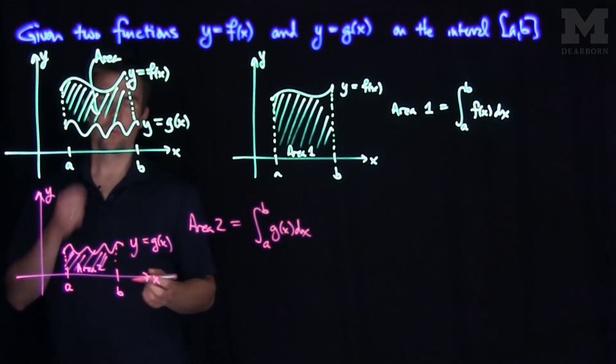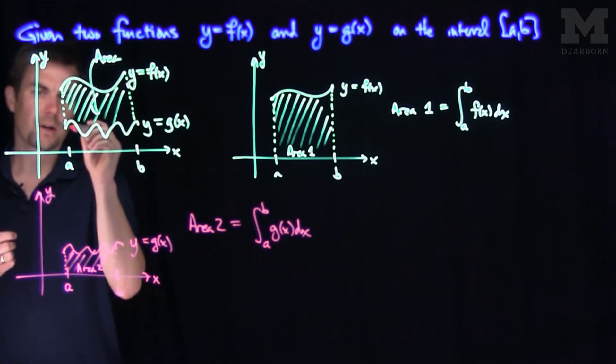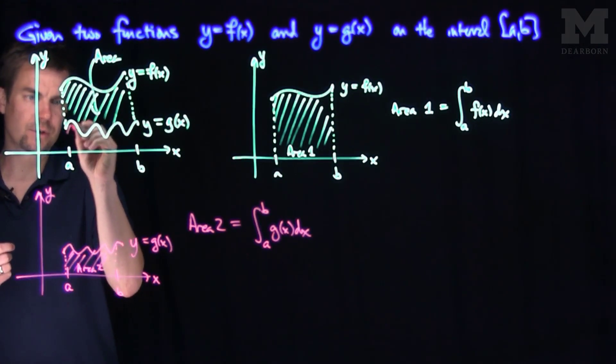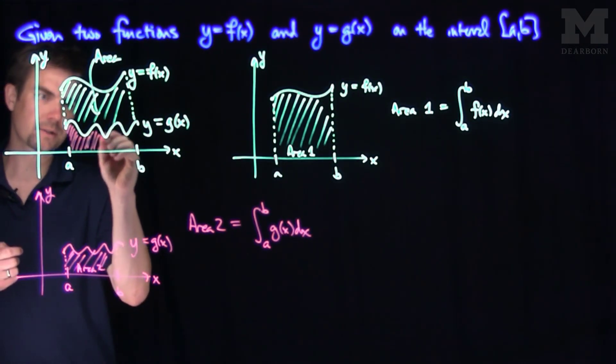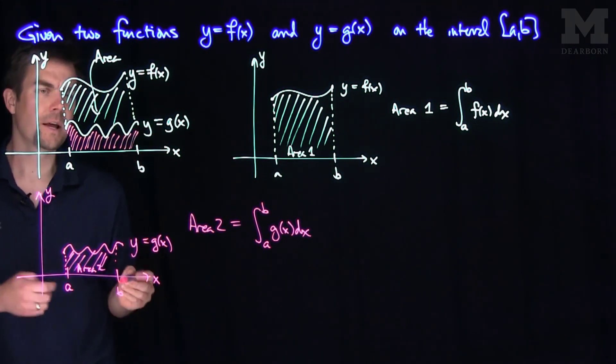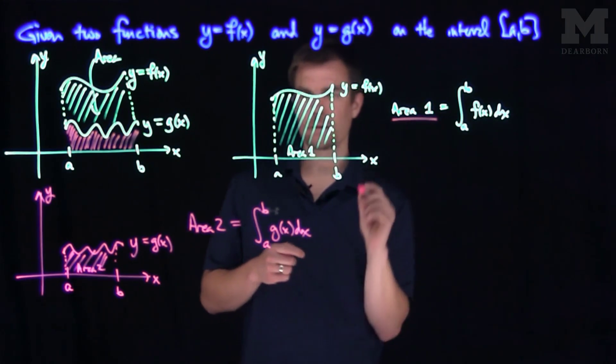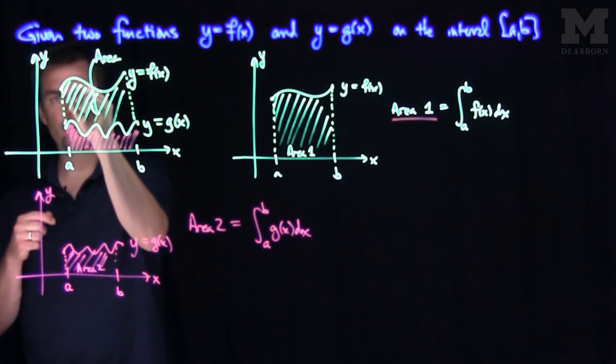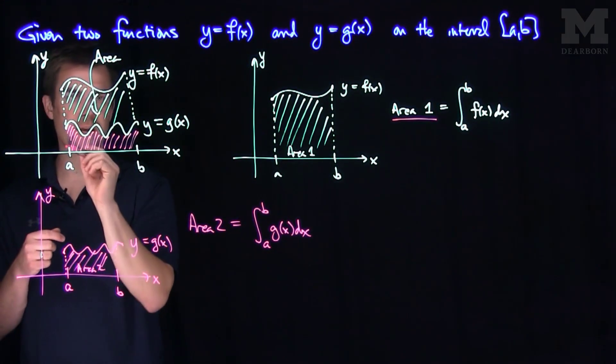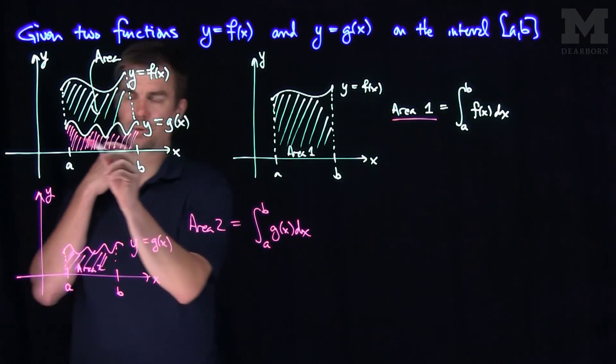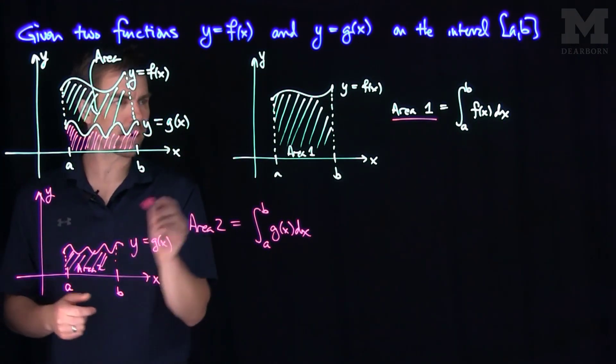And so now what we can think of is we can say, well what we've done here is we can put in that area two right over here in our original picture, there it is. And so it looks like if I take area number one, area number one would be this whole area over here, this green area and this pink area. And if I subtract off that pink area,